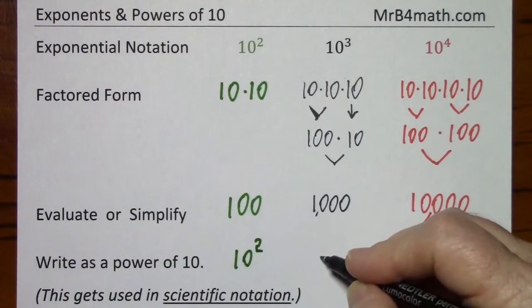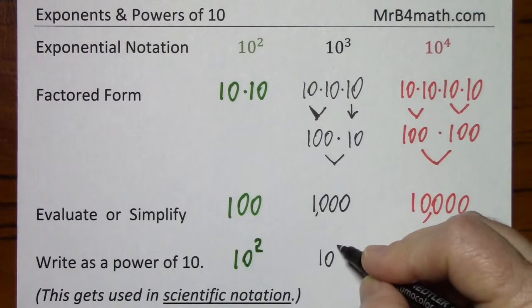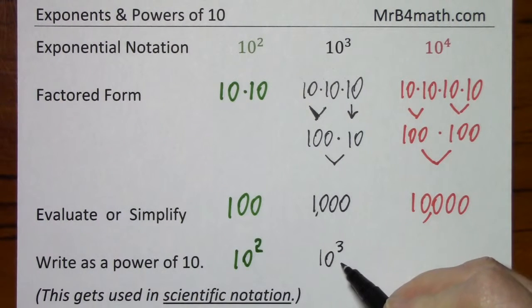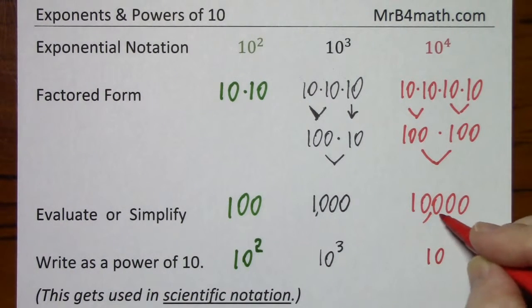For 1000, you put your base of 10, count the 0s, and you know this is correct. And finally, for 10,000, the base of 10, and 4 0s.